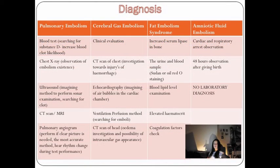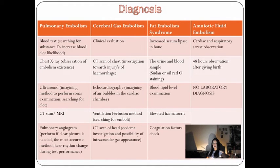Diagnosis of pulmonary embolism: blood test, chest x-ray, ultrasound, and CT scan. For amniotic fluid embolism, diagnosis involves cardiac and respiratory arrest observation and 48-hour observation after giving birth. For fat embolism syndrome, diagnosis involves increased serum lipase in bone, urine and blood samples, and blood lipid level examination.